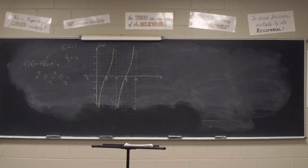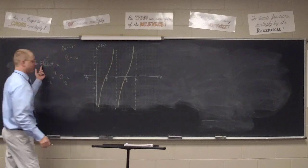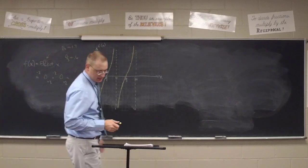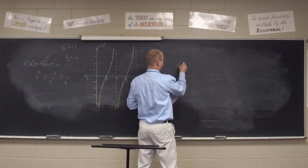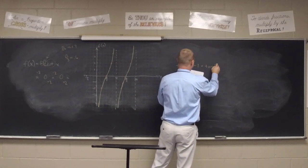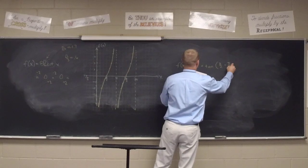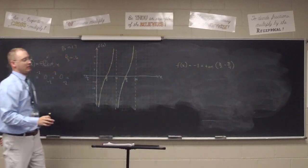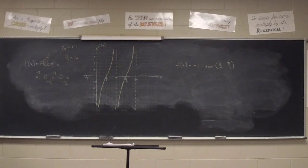The tangent curve goes up, and since we flipped it, the cotangent should go down. Let's do another example. The next graph is f(x) = -1 + tan(x/2 - π/4).